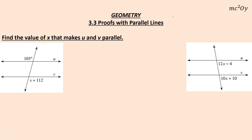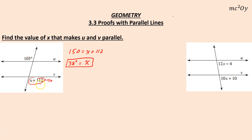In this example, find the value of X that makes lines U and B parallel. I want those lines parallel, so based on what's given, these two angles are alternate exterior angles and must be congruent. So 150 equals X plus 112. Subtracting 112, X equals 38 degrees. When X equals 38, this angle equals 150, giving us congruent alternate exterior angles, therefore U is parallel to V.